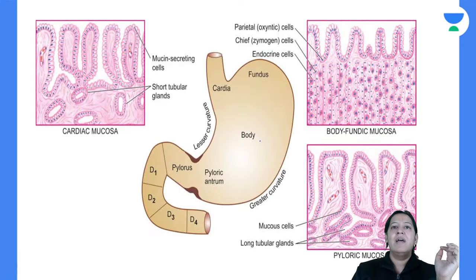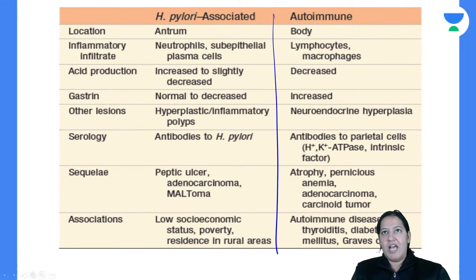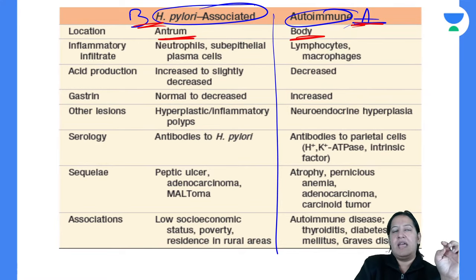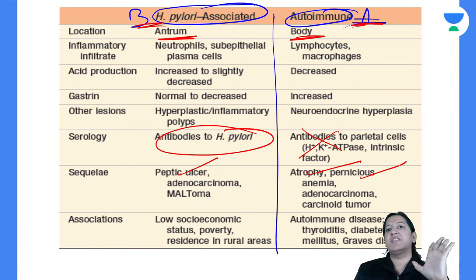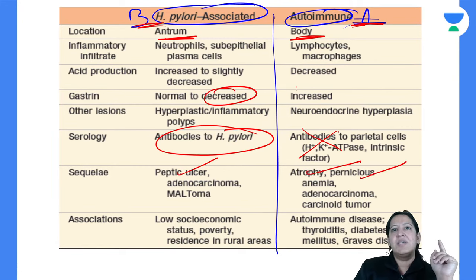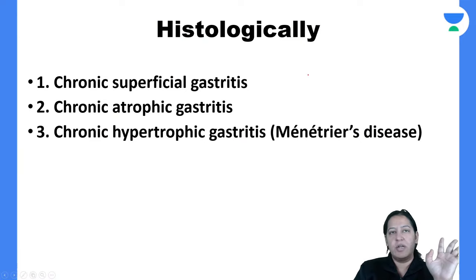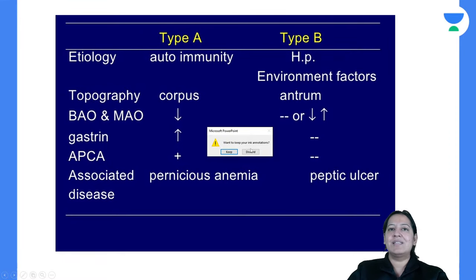So I am done. Type A autoimmune — autoantibodies against parietal cells, occurs in body. Type B bacterial (H. pylori) — occurs in antrum. Here autoantibodies are formed, peptic ulcer does not occur but there is atrophy and pernicious anemia. Here no autoantibodies but peptic ulcer occurs. In Type A, HCL is decreased and gastrin is increased. In Type B, HCL is increased and gastrin is decreased. The histology of gastritis is not very important. The two types were the important points.